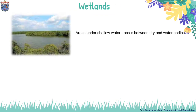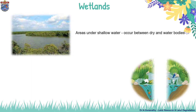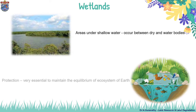Areas under shallow water are known as wetlands and occur between dry land and water bodies. It has to be protected, as it is very essential to maintain the equilibrium of the ecosystem of Earth.